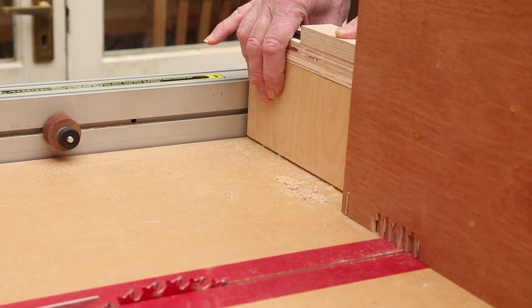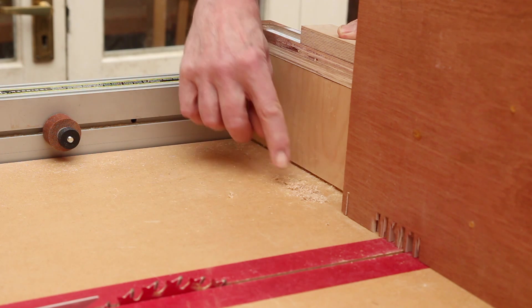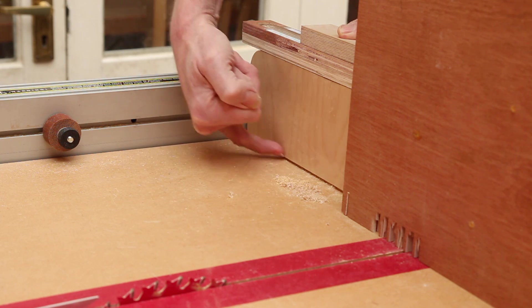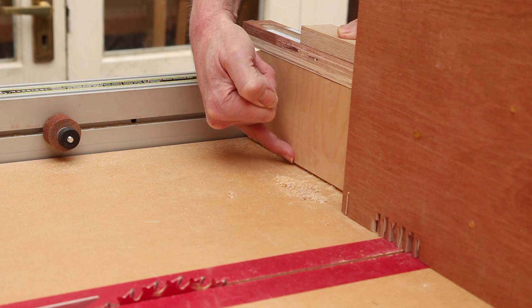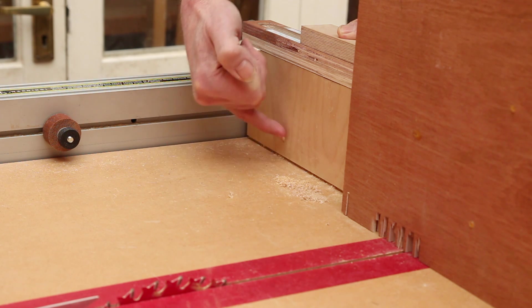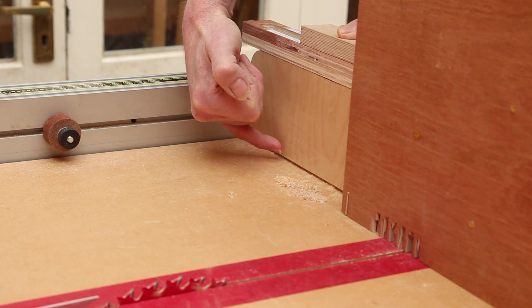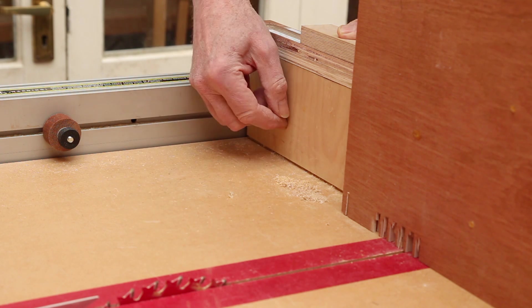So the issues that have come to light with this simple box joint jig. First of all, sawdust. The reason you have a relief underneath the crosscut sled fence here is so that any sawdust goes into the relief slot and doesn't tend to push the workpiece forward.